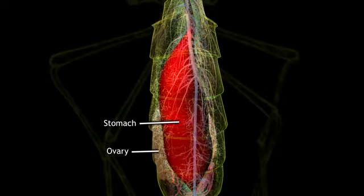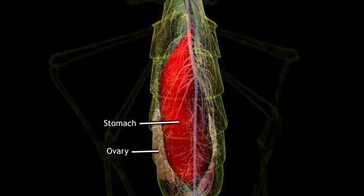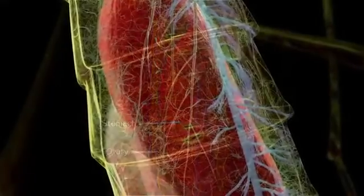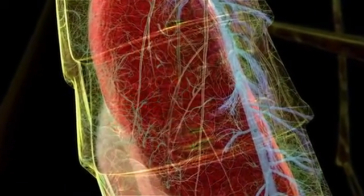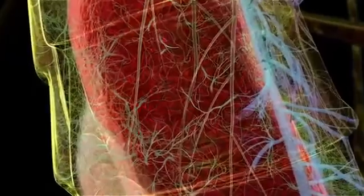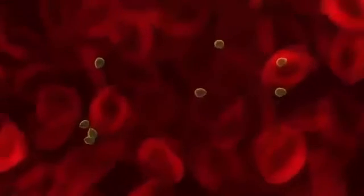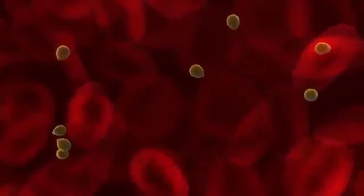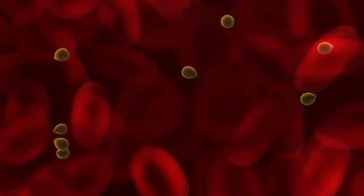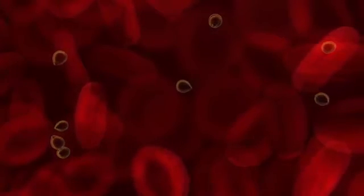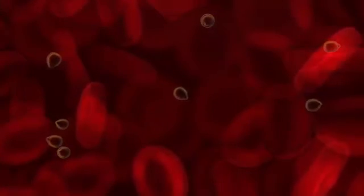If she drinks blood from someone infected with malaria, she too becomes infected with the disease. The tiny drop of blood filling the insect's stomach is teeming with malaria parasites. The parasite form that is deadly inside humans cannot survive in a mosquito's stomach and is slowly digested with the rest of her blood meal.